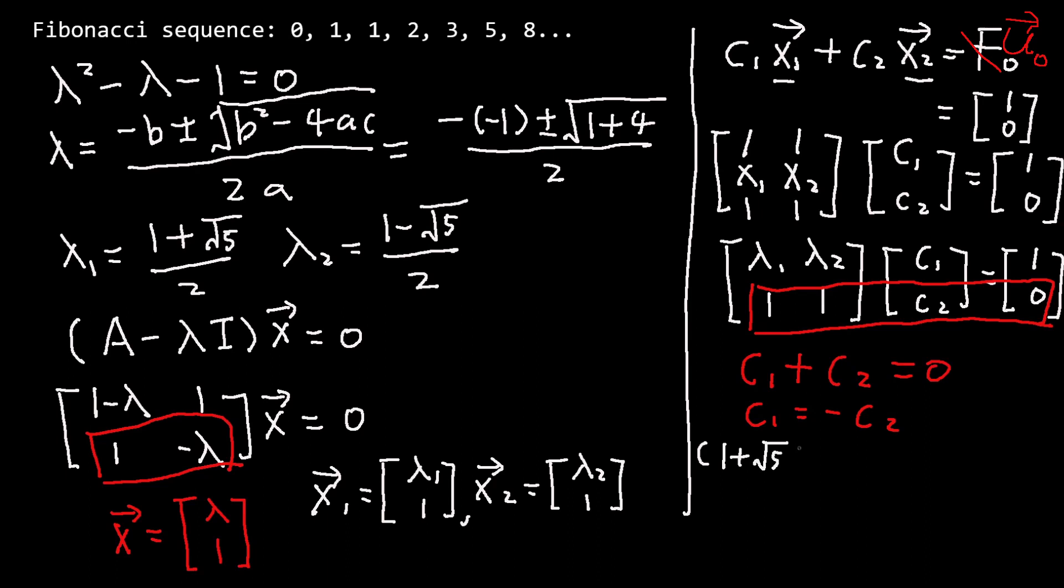Substituting C_2 in equation 1, we have C_1 equal to 1/sqrt(5) and C_2 equal to -1/sqrt(5).